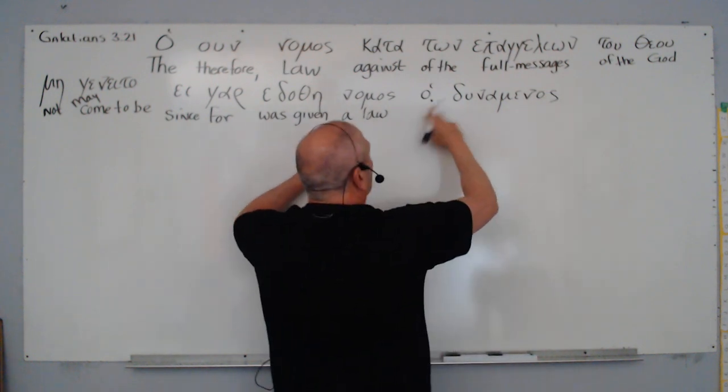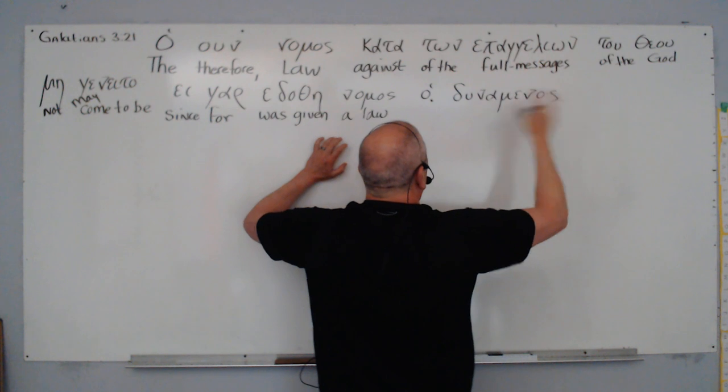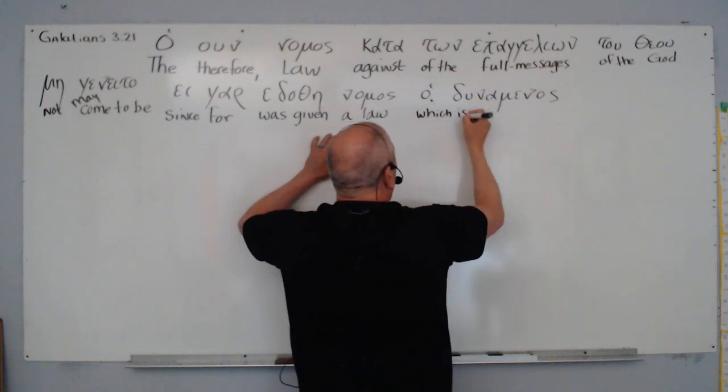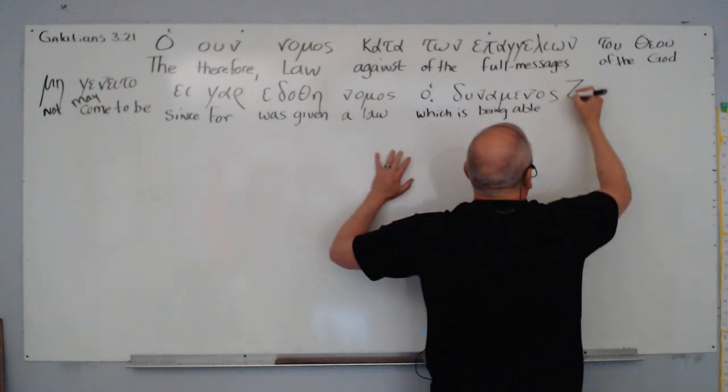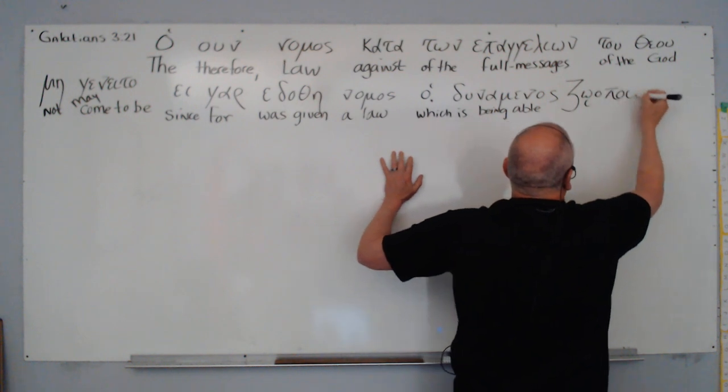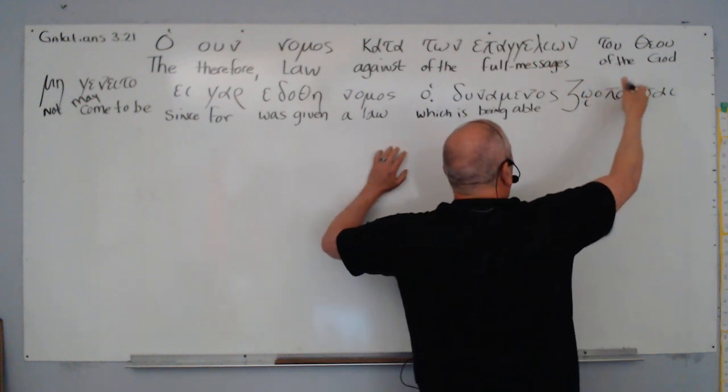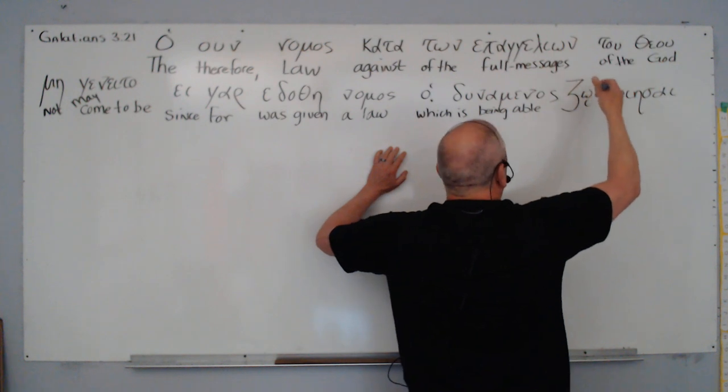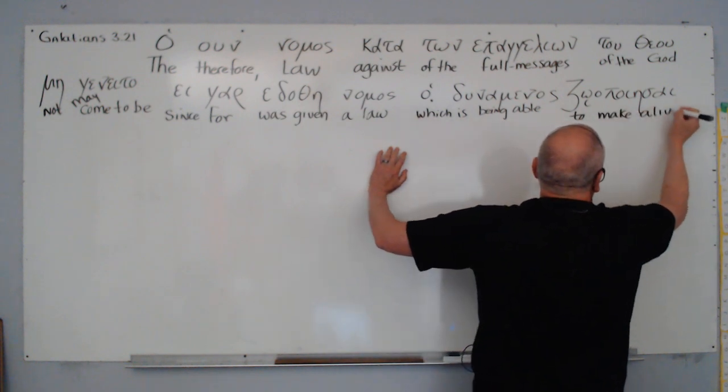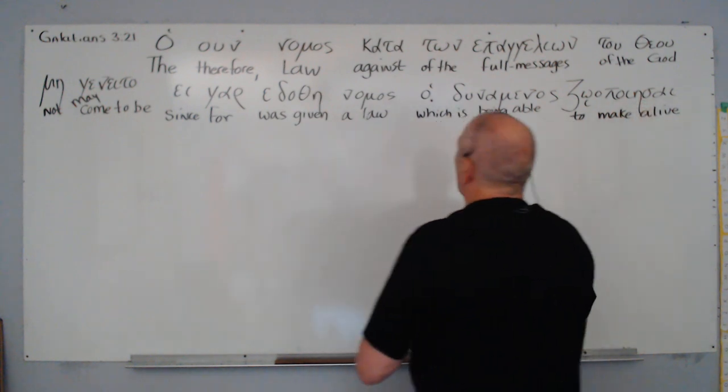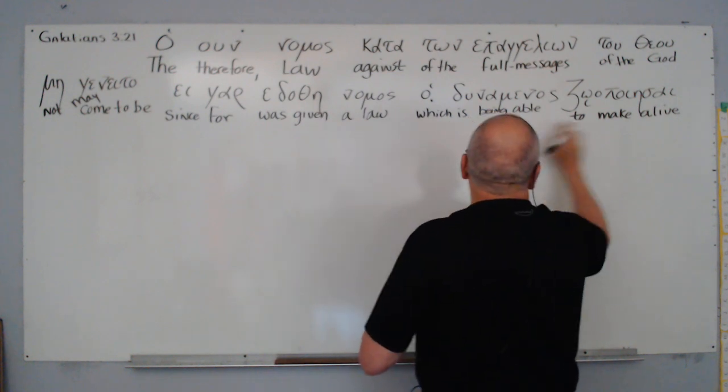Denominos, this is present participle from denomai, it's deponent, middle and passive in form but active in meaning, which is being able. And then we have this lengthy word here, zo and then poi a psi. That's aorist infinitive. It's two words, make or do or cause, and then zo, life. So to make alive or cause to be alive. So he says, for since a law was given which is being able to make alive.